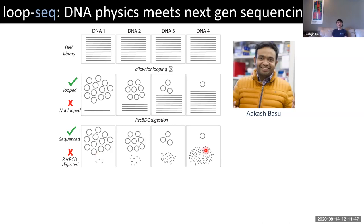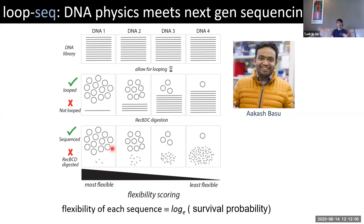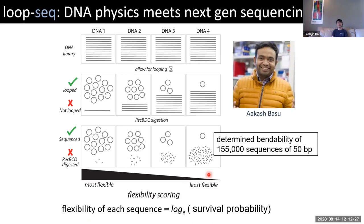This is a way to enrich for highly bendable sequences. We then do sequencing using next-generation sequencing machines, and normalize reads by the input. You can calculate the survival probability, which is highest for the most bendable sequence. We simply take the natural log of that as a measure of flexibility, bendability, or cyclizability — I'm using these terms interchangeably in this talk. Akash has done this for lots of different sequences. Currently he has data from over 250,000 different sequences of 50 base pair length, so we have enough data to really try to get at the mechanical code of the genome.